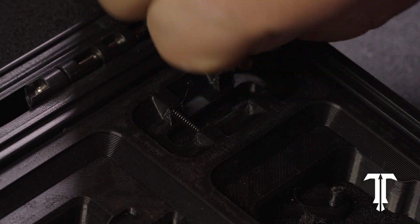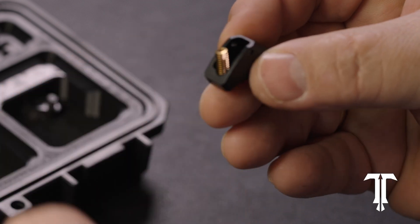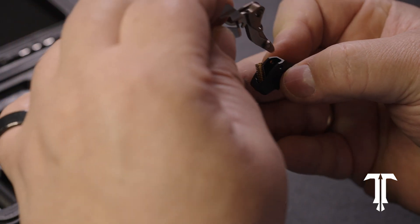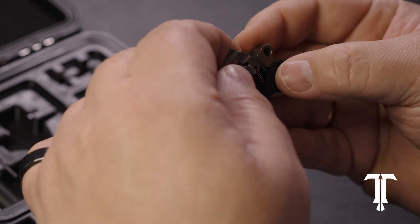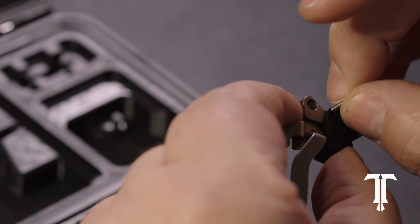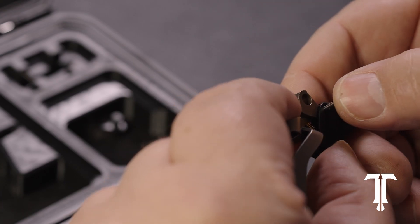Grab the spring from the box, place it in the spring pocket, put back the trigger shoe making sure to engage the little pilot on the transfer bar, and then finally reinstall the pivot pin.